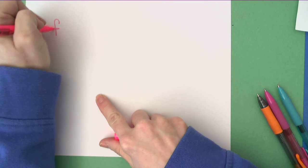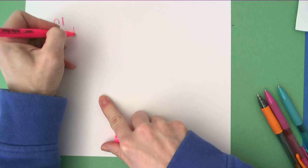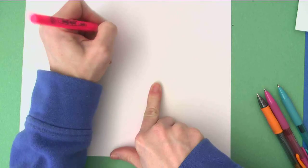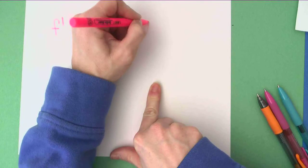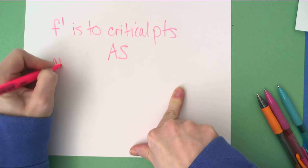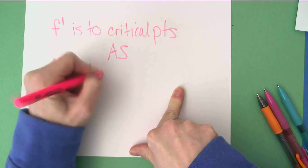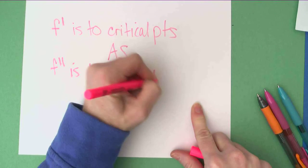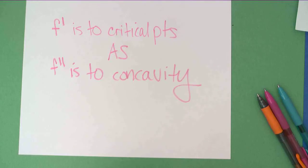A little analogy to finish this off would be something like this: first derivative is to critical points as second derivative is to concavity. And we'll be using these in our next lesson. For the actual examples of this lesson, please watch chapter 4, video 2. And we'll see you next time.